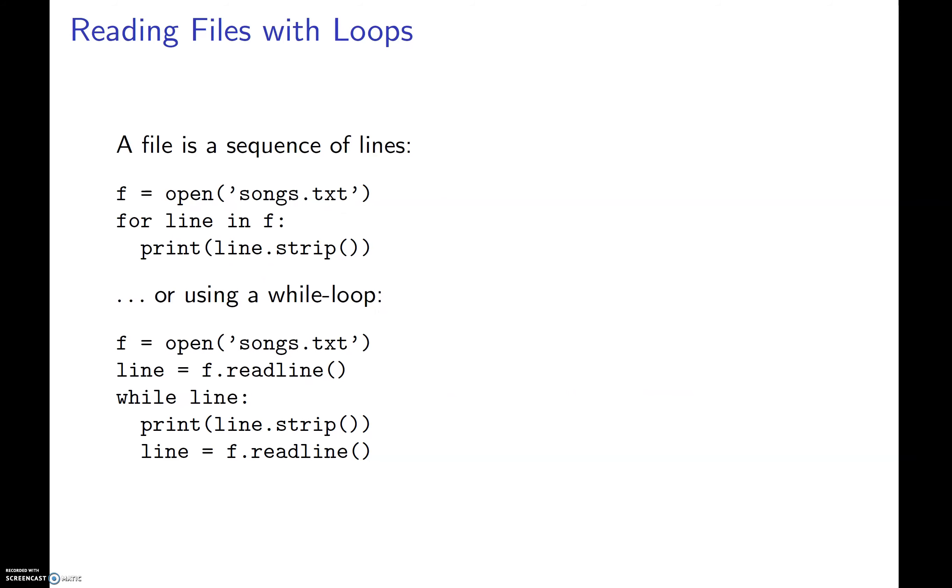Here's a file with a sequence of lines. We're going to use open here. This will give us access to the file songs.txt, and then we're going to go through a for loop. Notice 'for line in f'. Line is going to scope the number of lines within songs.txt, and then print.